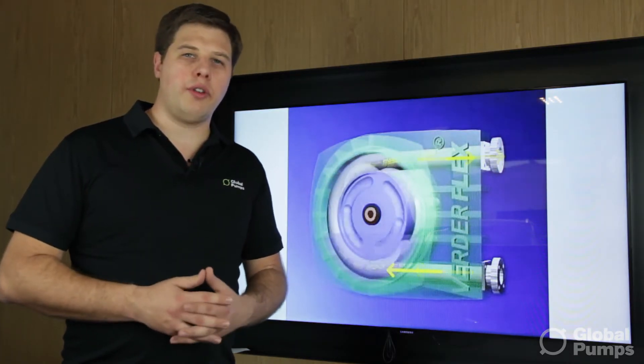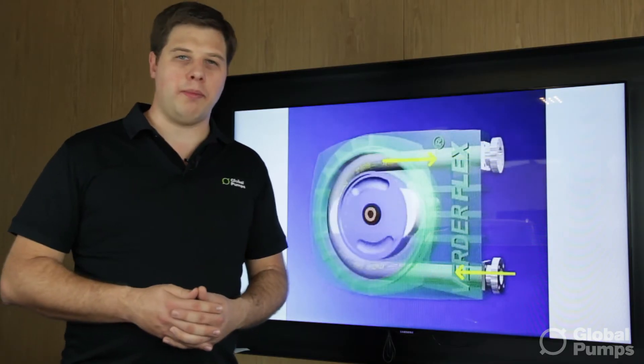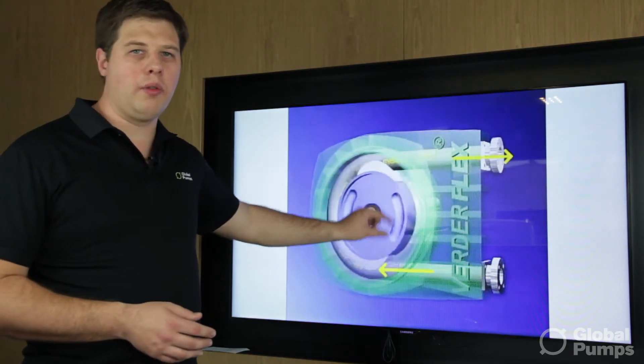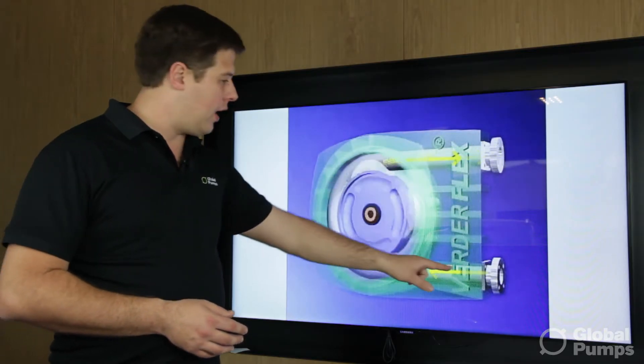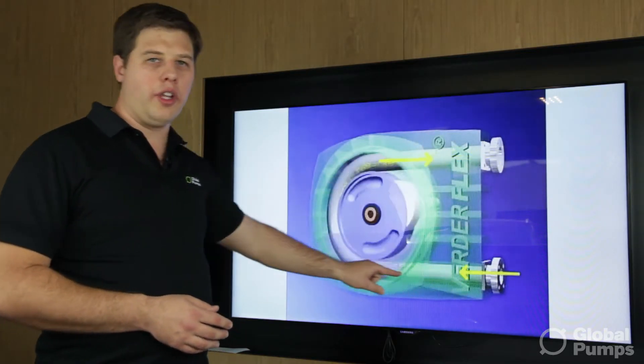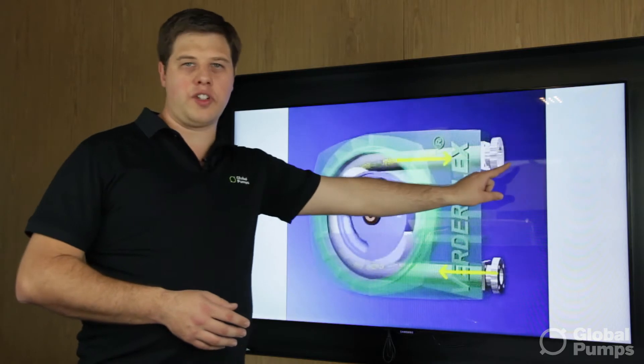What we have here is a rotary positive displacement pump. We have a rotor with pressing shoes that press against the hose and it transfers the liquid from the suction side to the discharge side.